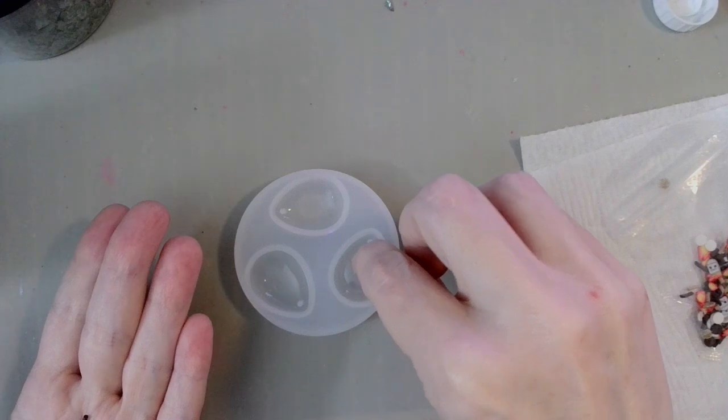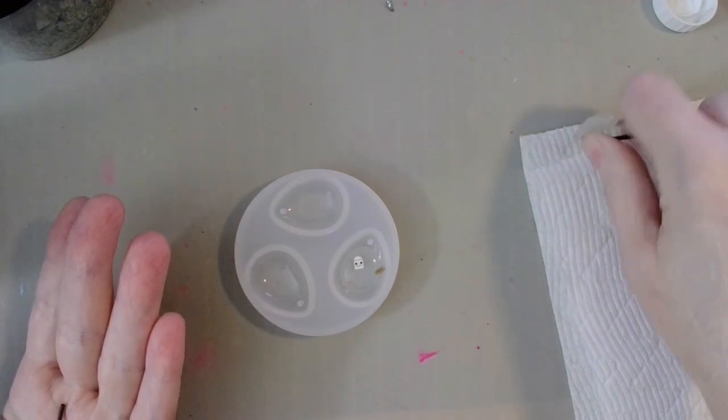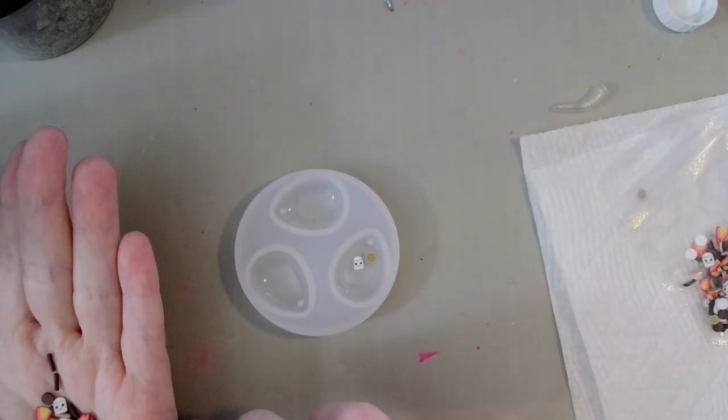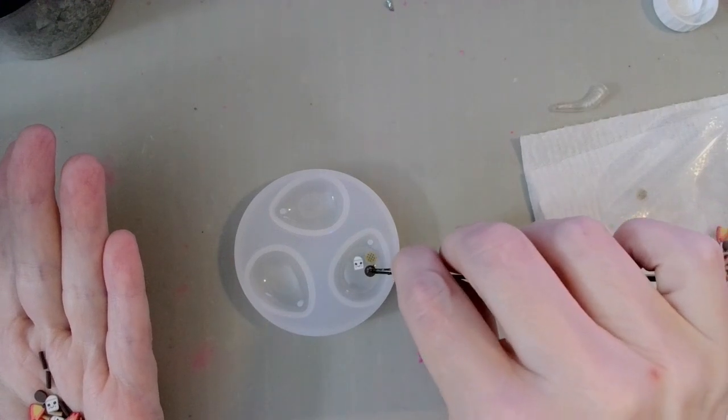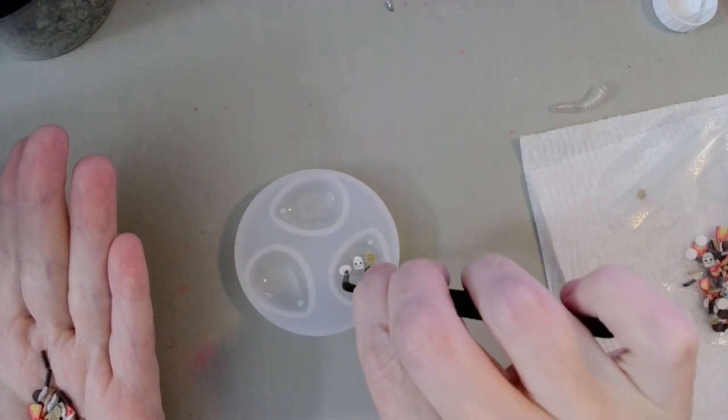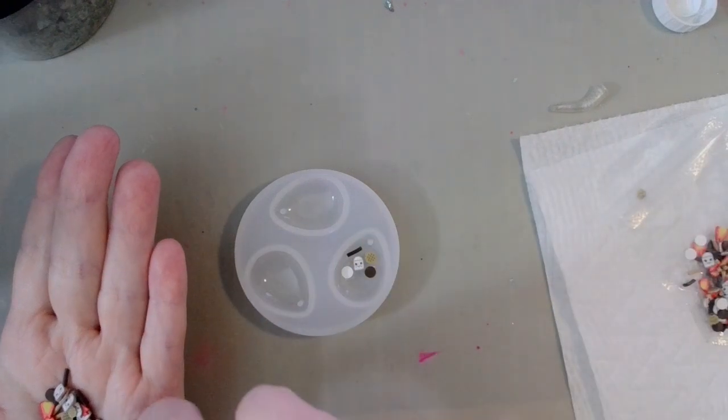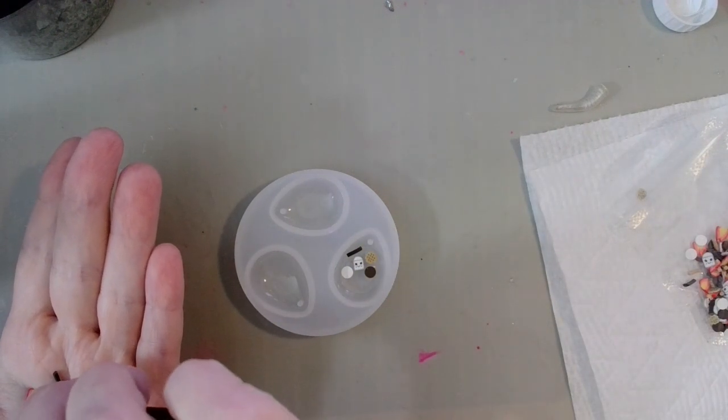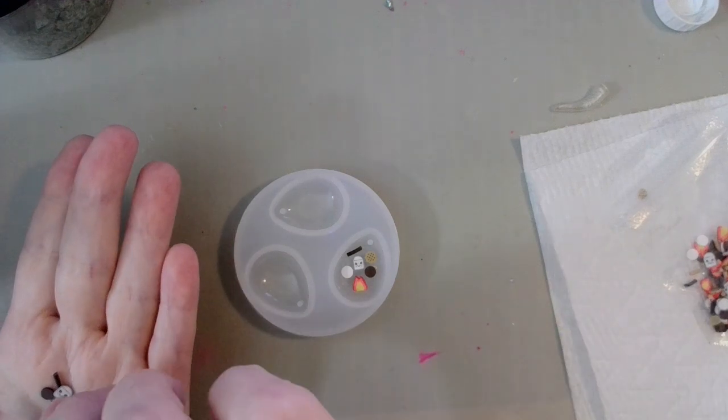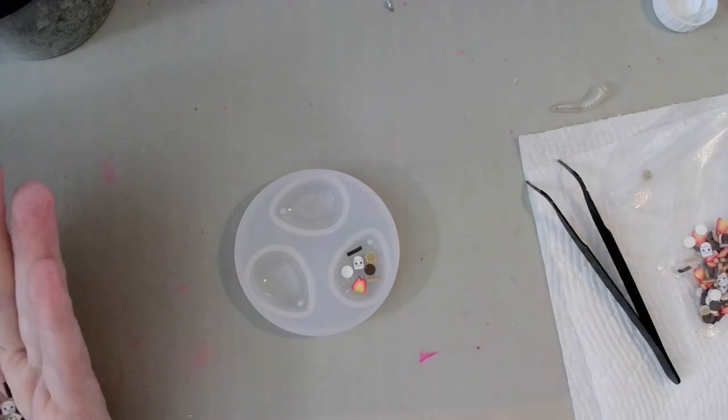I'm going to get the tweezers because if you guys have worked with polymer clay slices, you know that these little things are fiddly. Chocolate on there. I'm going to get some sprinkles, put a little flame down at the bottom. There we go, light brown sprinkle. Okay, so next.